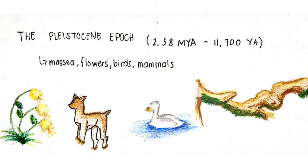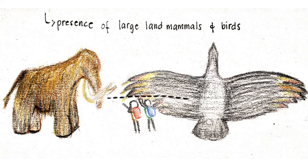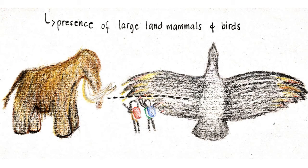Mosses, flowers, birds and mammals spread throughout the continents. Mammals such as saber-toothed cats and mammoths roamed the Earth during this period.